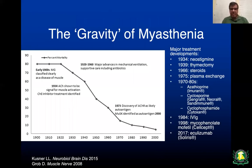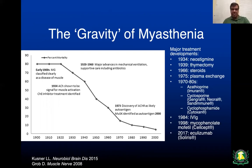Myasthenia gravis was truly a grave disease in the early 20th century, which is where the name comes from. However, with advances in medication, treatment, and ICU care, it is no longer as grave as it was in the 1930s. In 1934, neostigmine was introduced by Mary Walker. Dr. Blalock performed the first thymectomy in 1939. Steroids were introduced in the 1960s. In 1975, the Mayo Clinic group performed their first plasma exchange. Most recently, eculizumab — a monoclonal antibody to the complement cascade — was approved by the FDA in 2017.